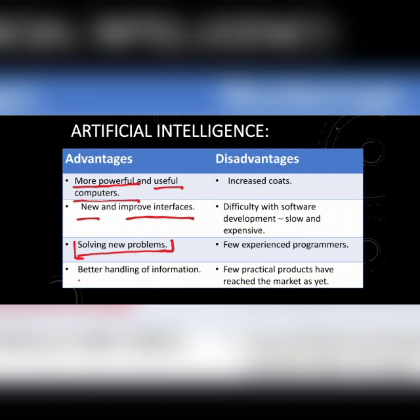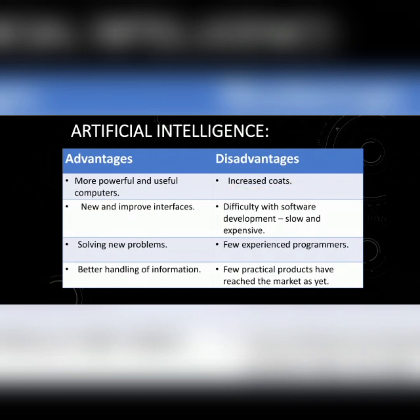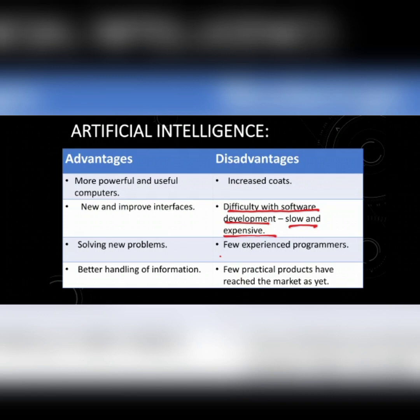The disadvantages of artificial intelligence: first is increased costs — the prices of these machines are high, which makes them unaffordable for many people. Next is difficulty with software development — machines can be slow and expensive. Sometimes the speed slows down and they are not affordable for everyone. Then there are few experienced programmers, and few practical products have reached the market as yet.